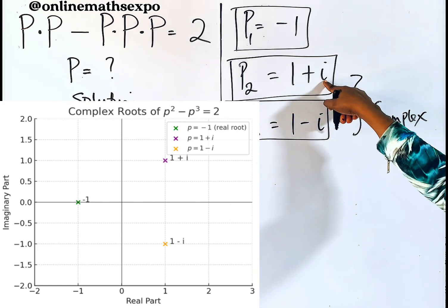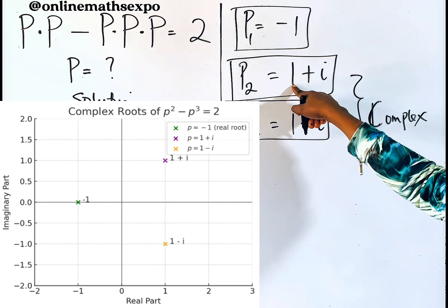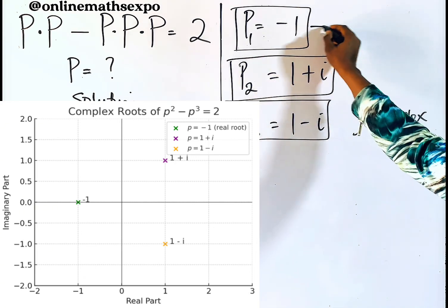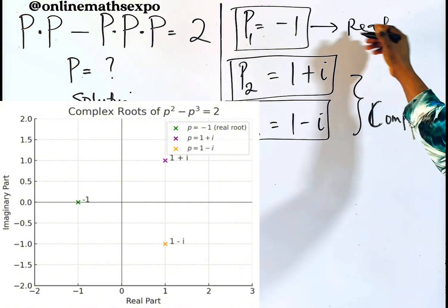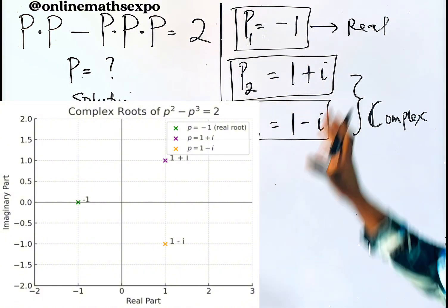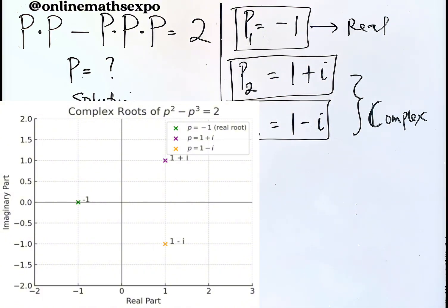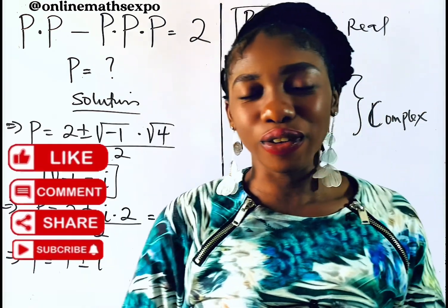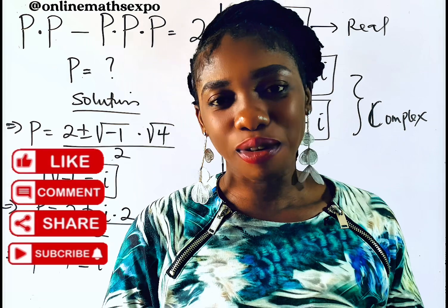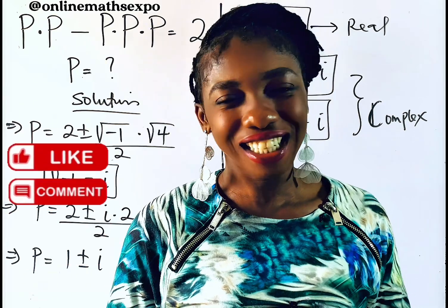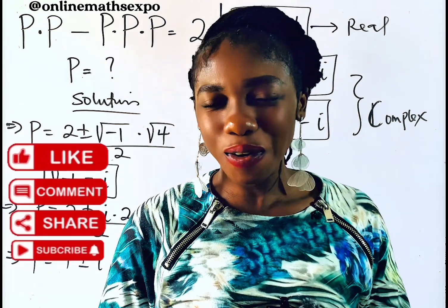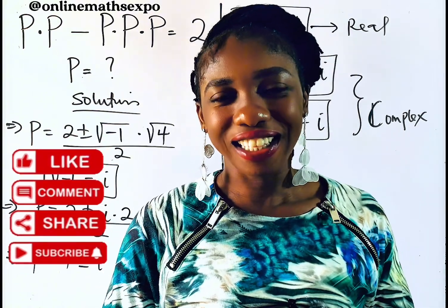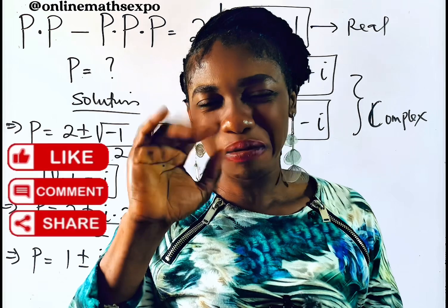The solutions p = 1 + i and p = 1 − i are complex because they contain both real and imaginary parts. The solution p = −1 is purely real and can be found on the number line. I hope you learned something — don't forget to like, subscribe, and share your own method in the comments. See you in the next class!